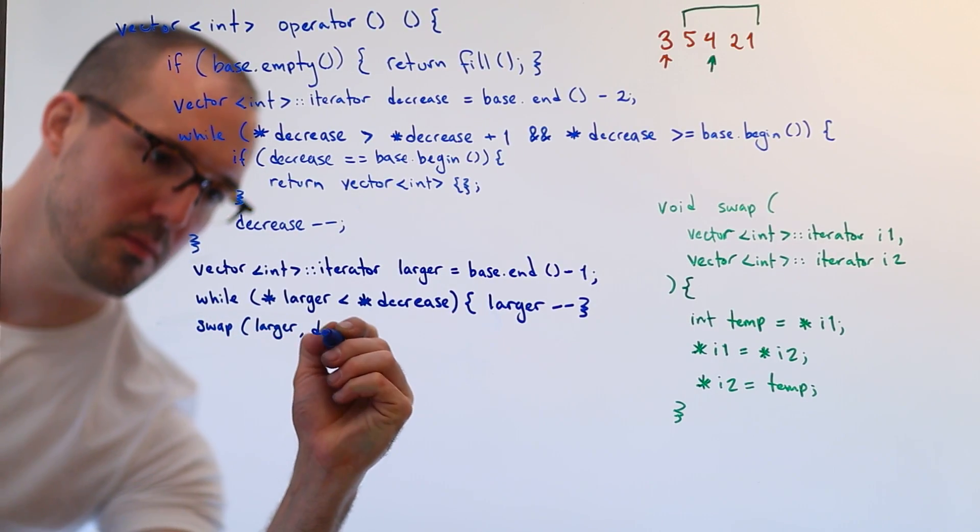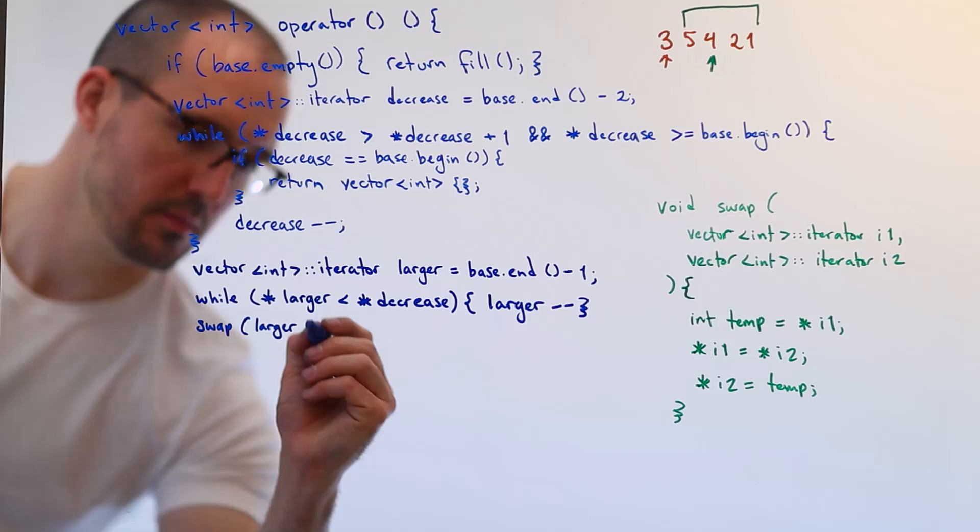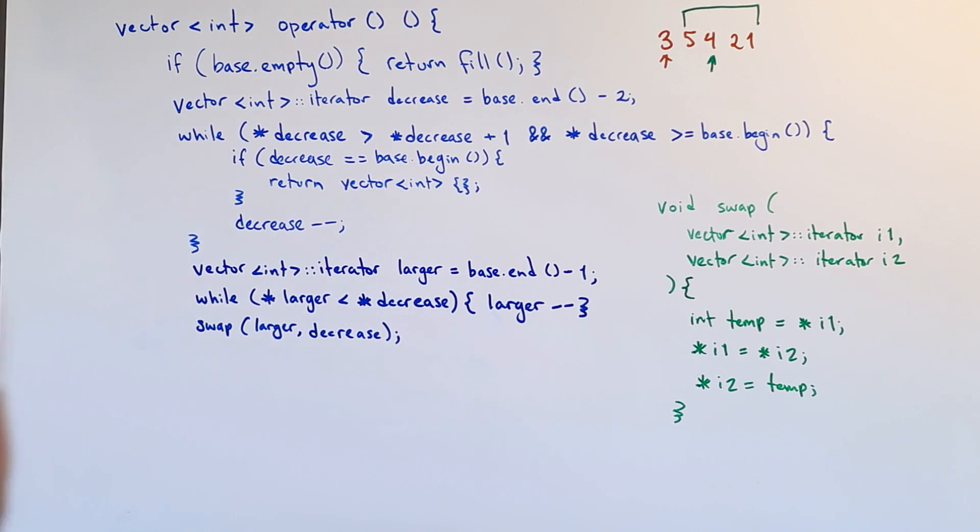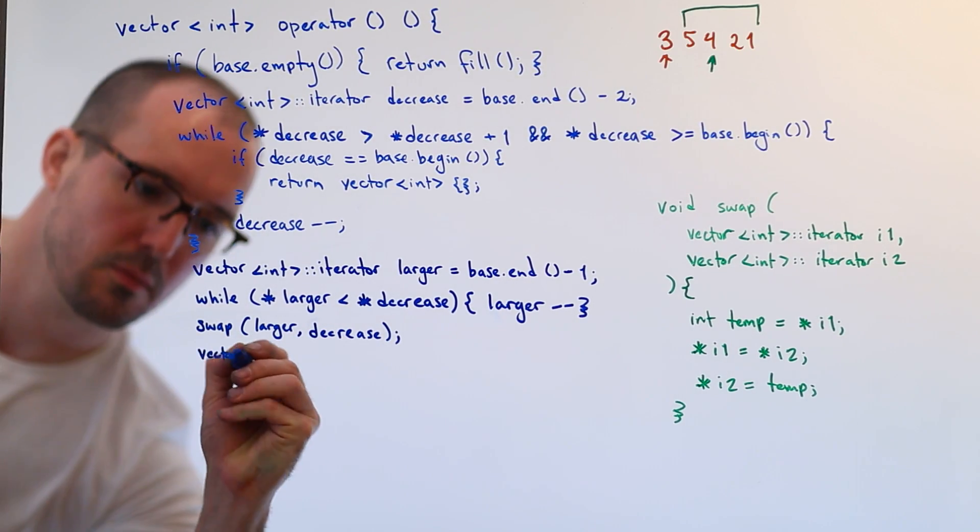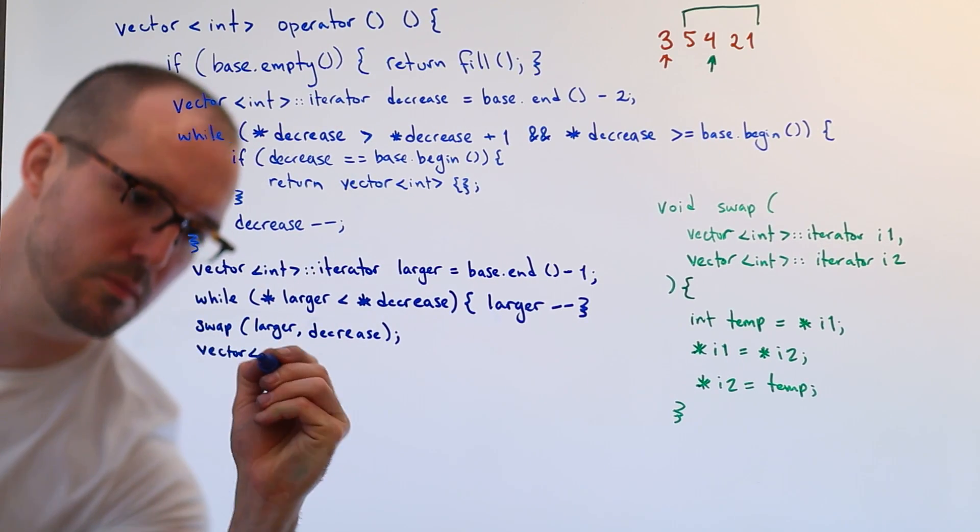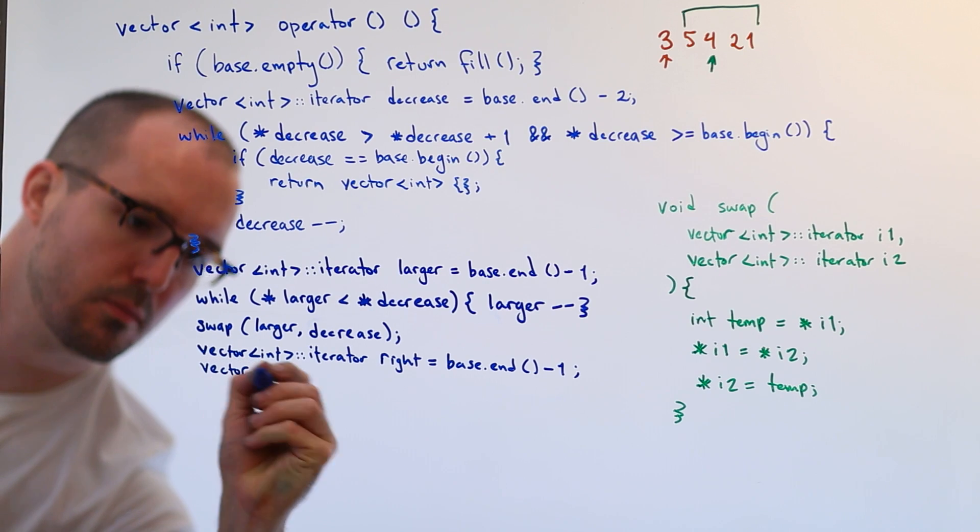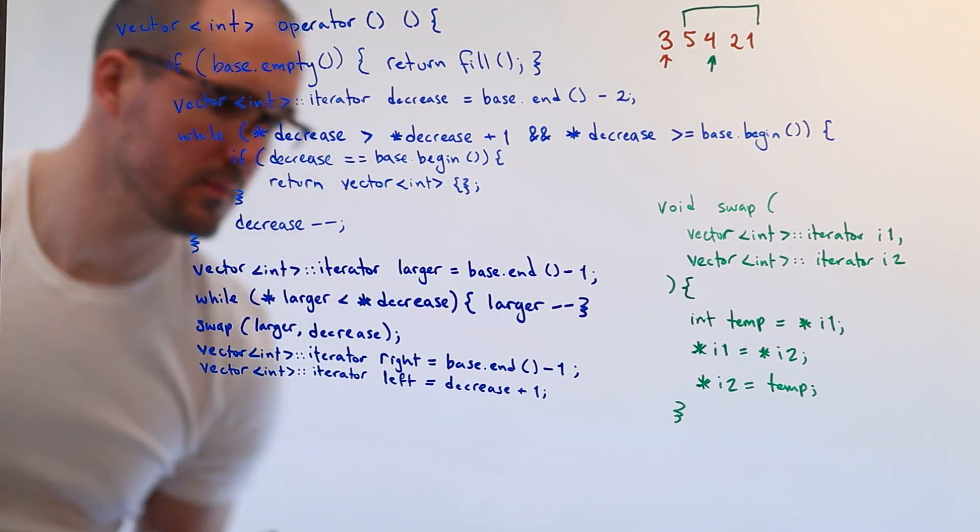Step one was to find the decrease in the vector. Step two was to find the next bigger value in the right side of the vector from that decrease. Step three was to swap them. Step four is now to reverse the remainder of the vector so that it will go from descending sorted order to ascending sorted order, putting the highest order numbers at the lowest order positions.